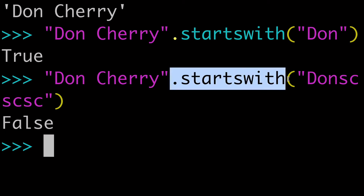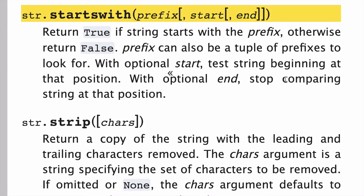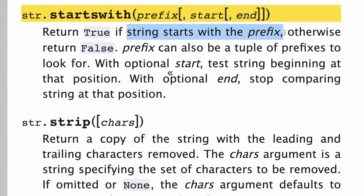So that's the basics of the startsWith string method, and we're going to go into much more detail and examples in this video. But let's start with a look at the docs. The startsWith string method takes one mandatory argument called prefix, and then two optional arguments called start and end. It's going to return true if the string starts with the prefix, otherwise it returns false — so basically a Boolean.